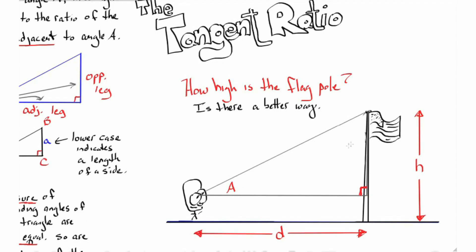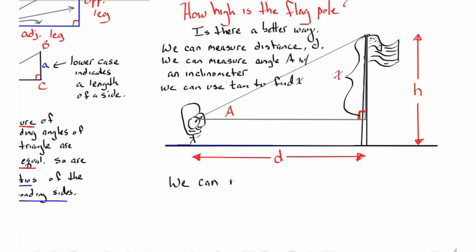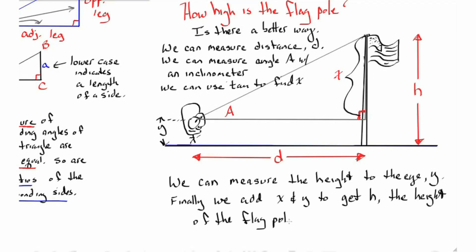We need to find the adjacent side d we can measure this. We can measure angle A with a simple inclinometer. Then we can use tangent to find the opposite side which is x. We can measure the height to our eye level, we'll call that y, and finally we can add x and y to get h, the height of the flagpole.